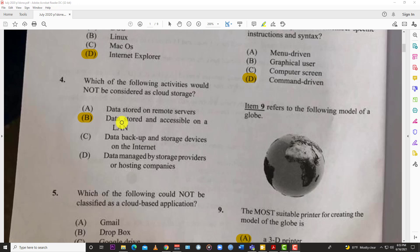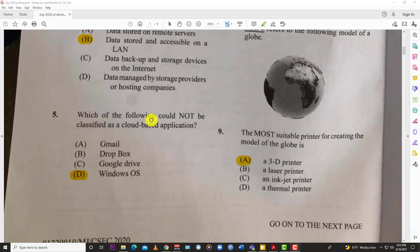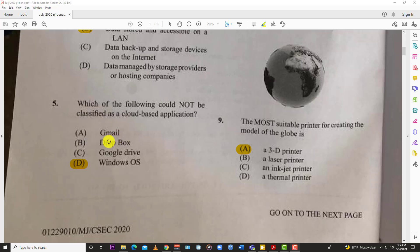Number five: which of the following could not be classified as a cloud-based application? Again, the examples I gave you of cloud storage are here: Gmail, Dropbox, Google Drive - they're off-site on servers. But Windows OS, that's the operating system local to that computer, not in the cloud. So if the computer crashes, Windows is gone. But if you log in somewhere else, you get your Gmail, Dropbox, and Google stuff still in the cloud.